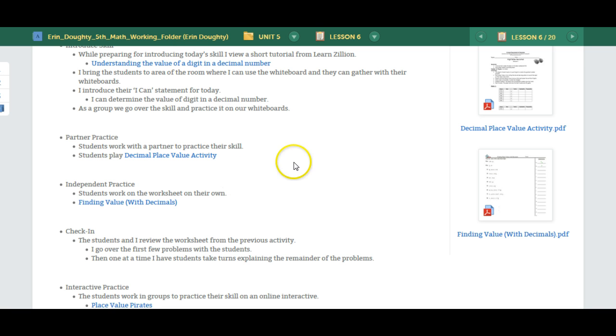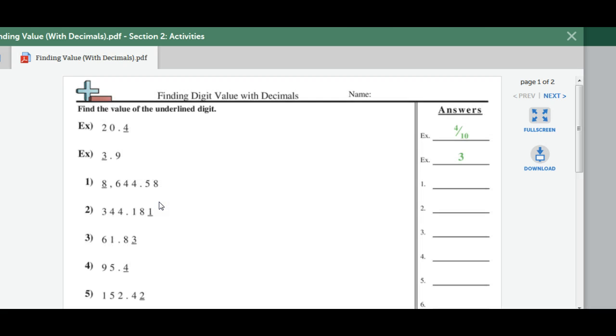The next day, students will be practicing independently. The students have to find the value of the digit underlined. So the value of this digit would be eight thousand. The value of this digit would be one one-thousandth, and the students should be writing those as fractions. There's two examples here to show them how to do that.